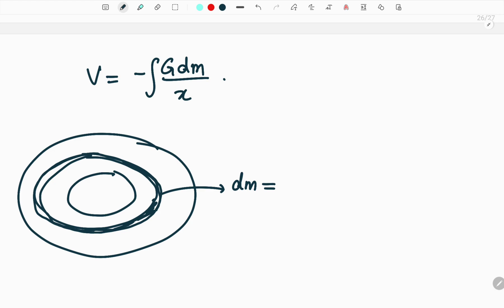Now we know generally mass is density into volume, isn't it? But since this is a two-dimensional object we will write surface density into area. So what is the surface density? Surface density will be total mass divided by total area. So what is the total area?